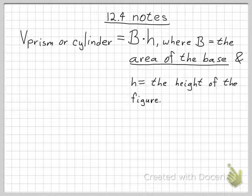So this is the formula for the volume of a prism or cylinder. B times h, capital B times h, where capital B is the area of the base.